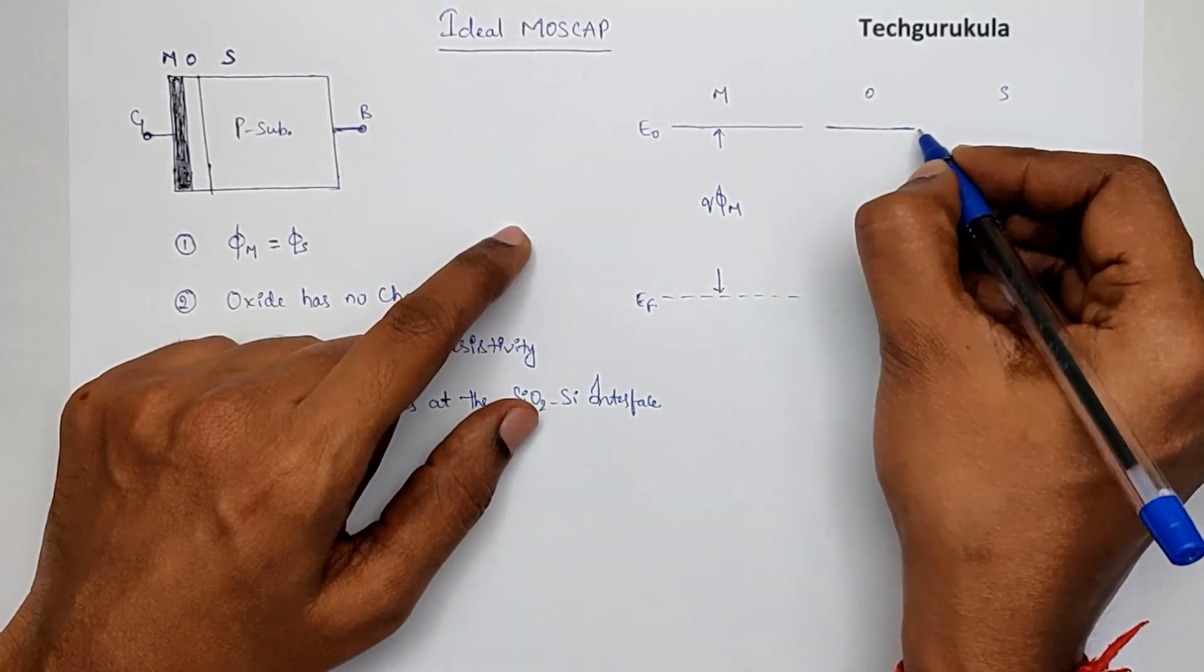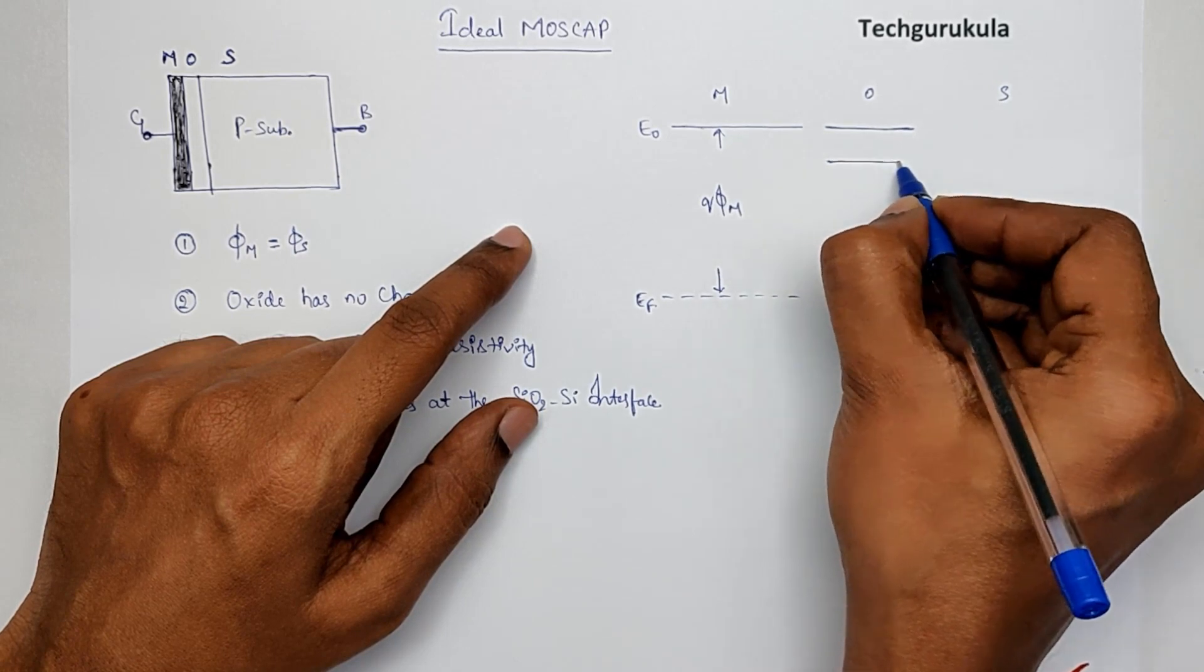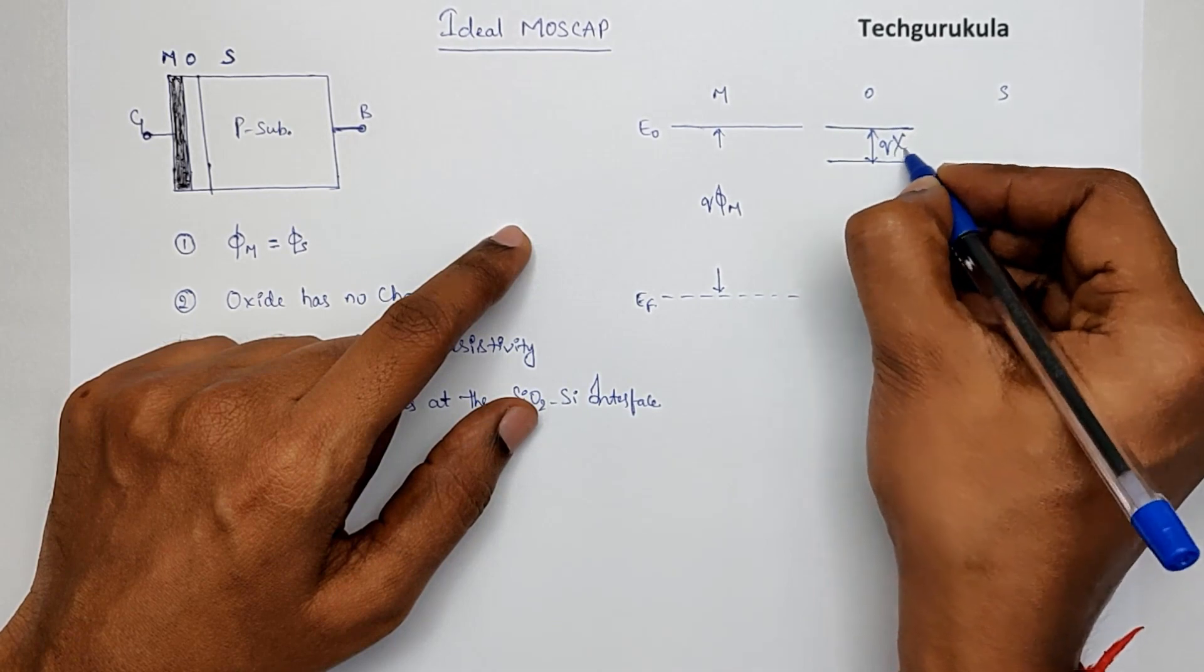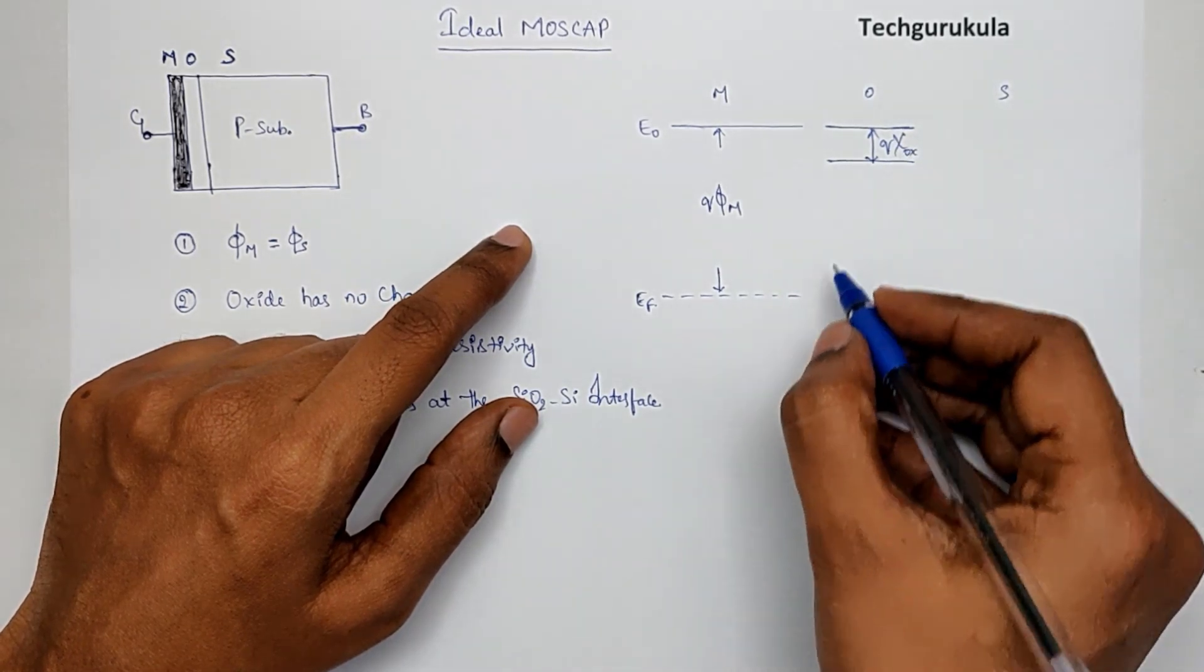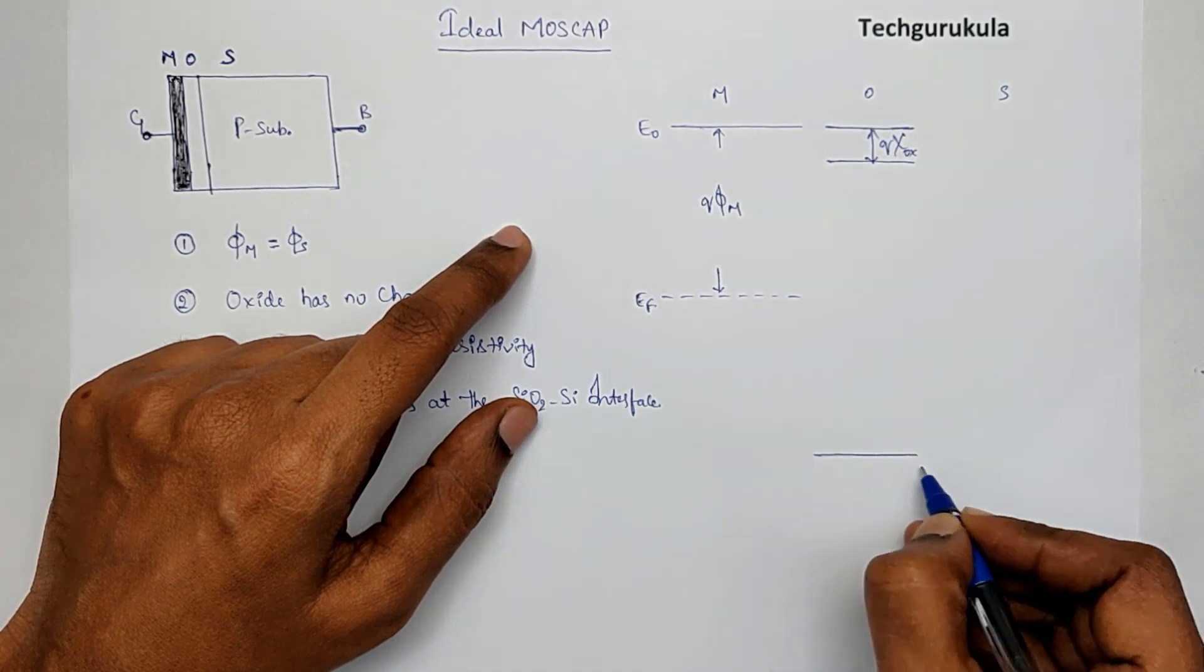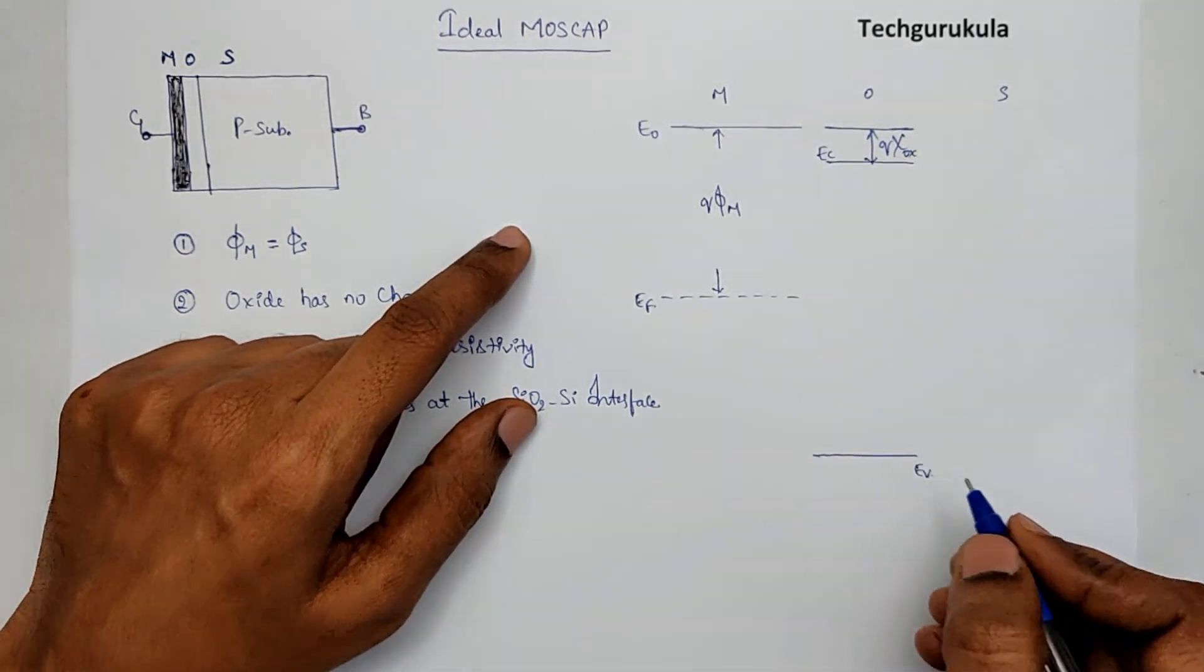And at oxide, we have E0 and EC is defined with respect to E0 with a value of Q times chi ox. This is EC and we have EV somewhere here. This is EC of the oxide.